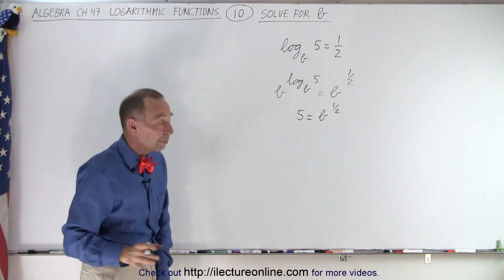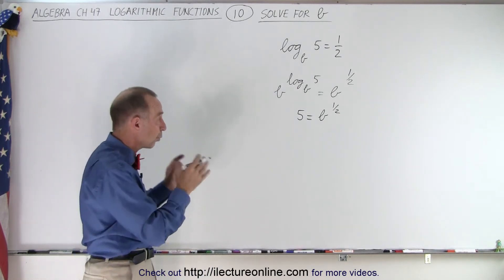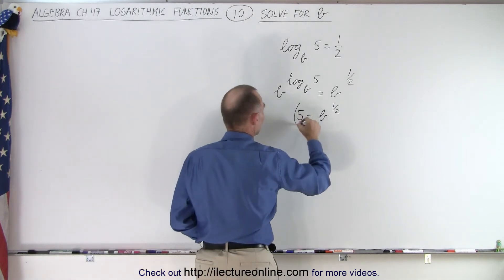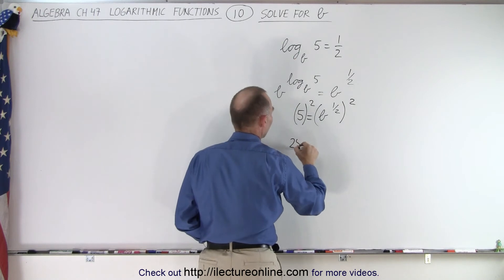Now, we're not looking for b to the 1 half power, we're looking for b to the 1st power. In other words, we can square both sides of the equation. I take the left side and I square it, I take the right side and I square it. On the left side I get 25.